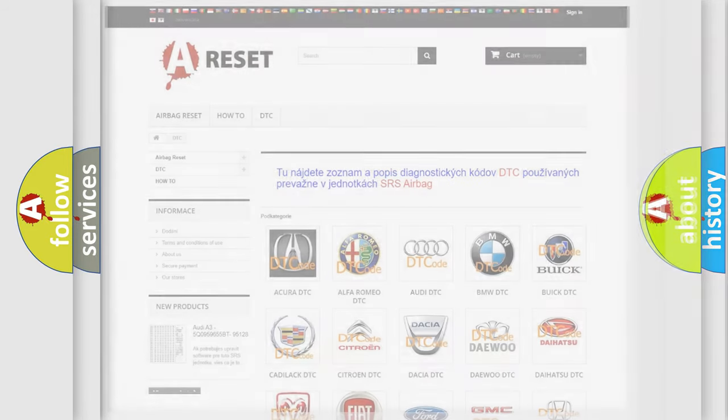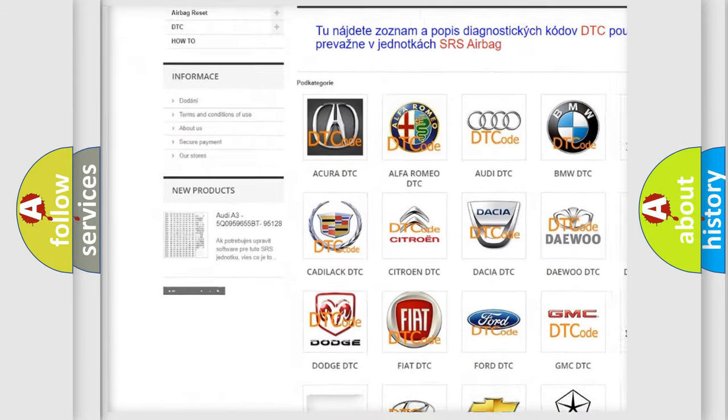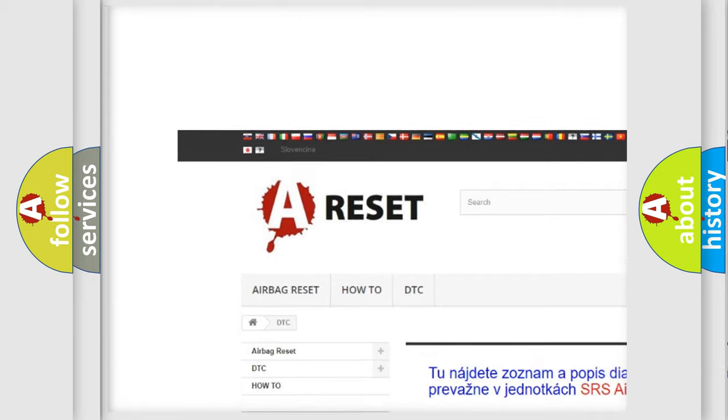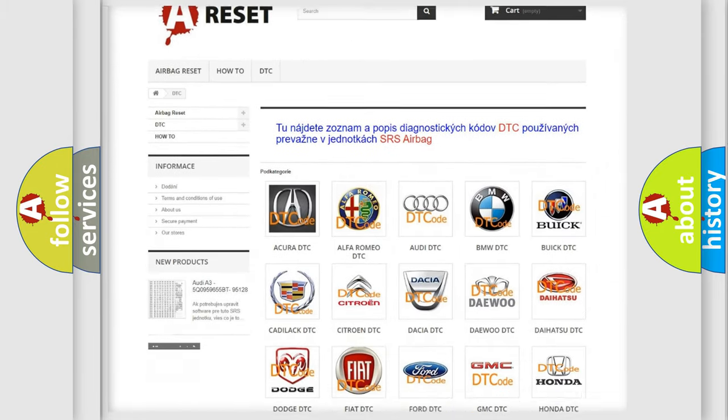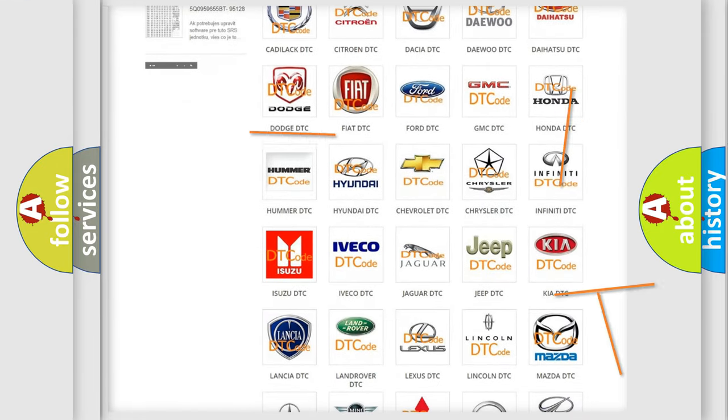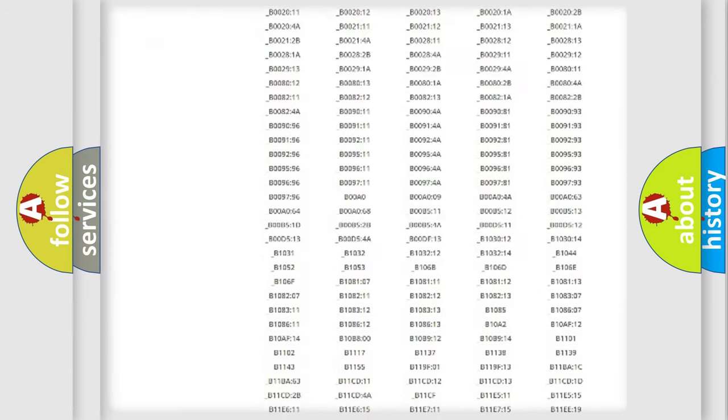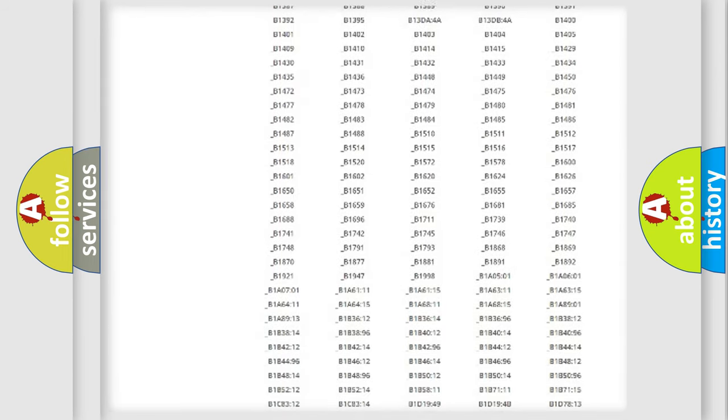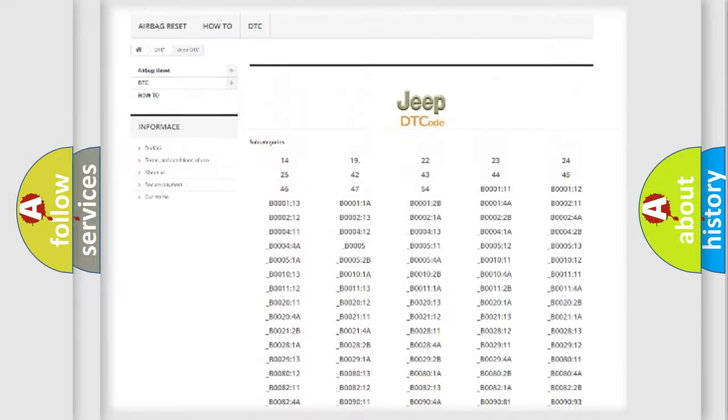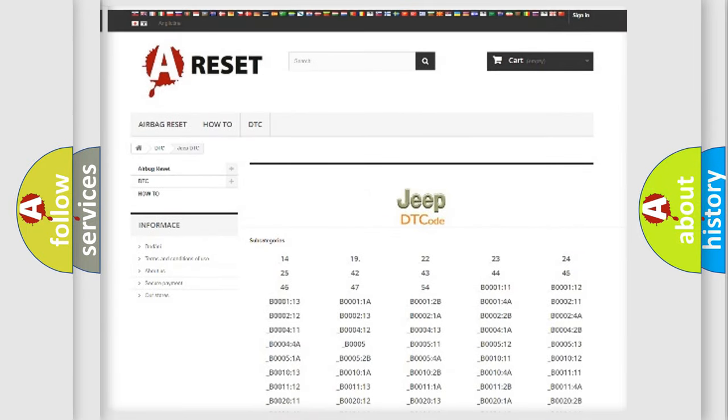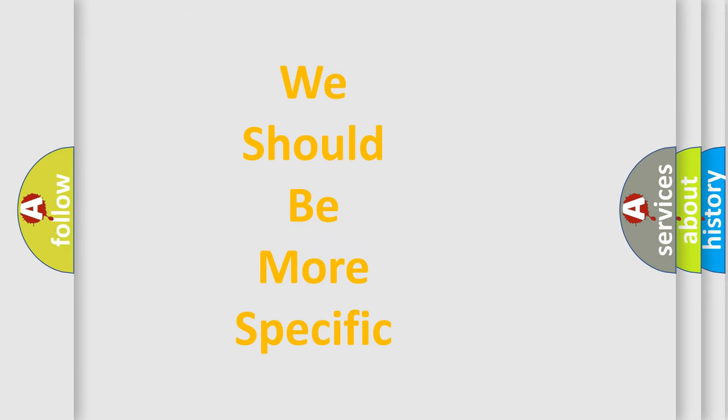Our website airbagreset.sk produces useful videos for you. You do not have to go through the OBD-II protocol anymore to know how to troubleshoot any car breakdown. You will find all the diagnostic codes that can be diagnosed in Jeep vehicles, and many other useful things. The following demonstration will help you look into the world of software for car control units.